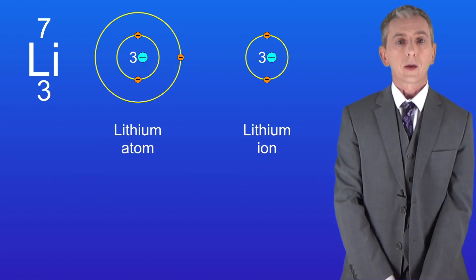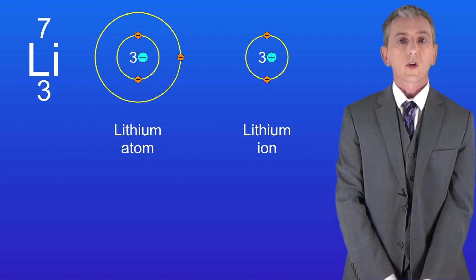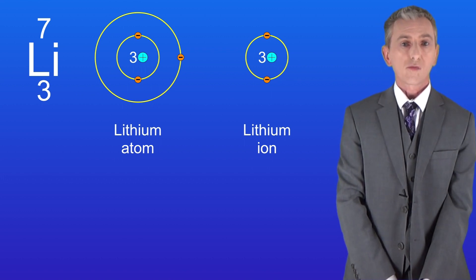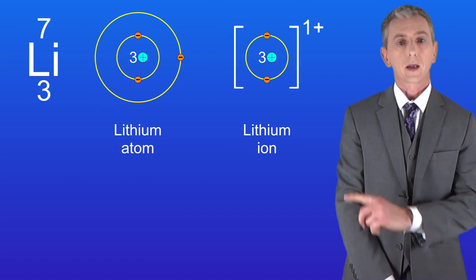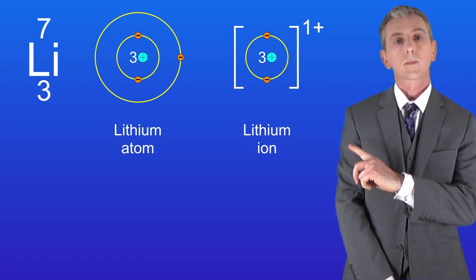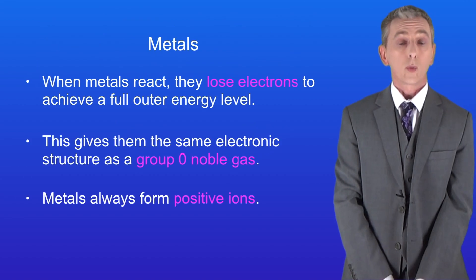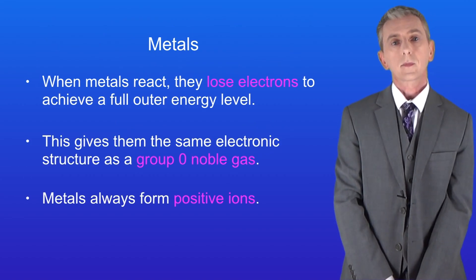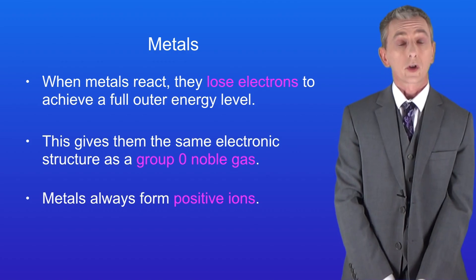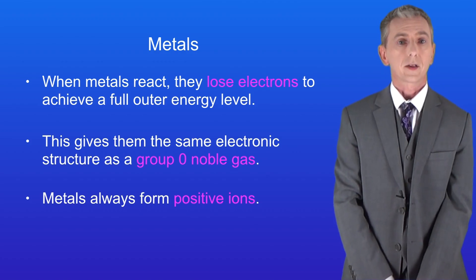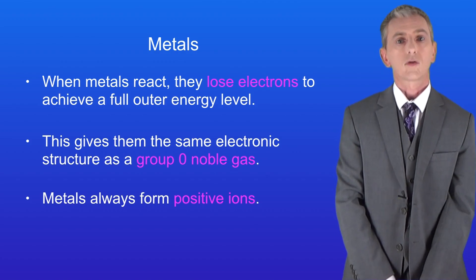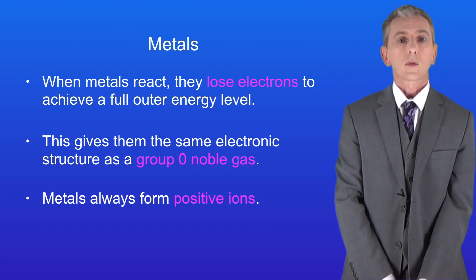So this is now a lithium ion. We show this by drawing square brackets around the ion and writing the charge on the top right hand corner like this. Here's the last key fact about metals: metals always form positive ions. In the exam you could be asked to work out the charge on a metal atom when it's lost its outer electrons and formed an ion, so I'm going to give you some examples to try yourself.